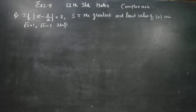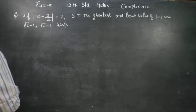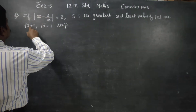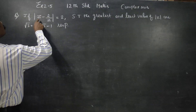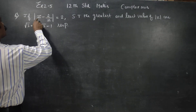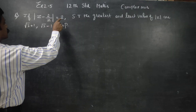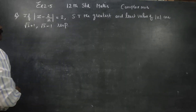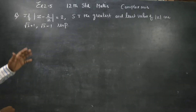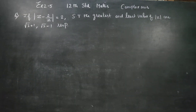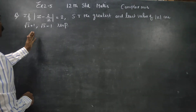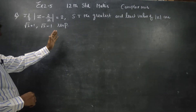Hello 12th standard students. In exercise 2.5, it is given that modulus of (z minus 2) by z is equal to 2. Show that the greatest and least values of |z| are root 3 plus 1 and root 3 minus 1 respectively.